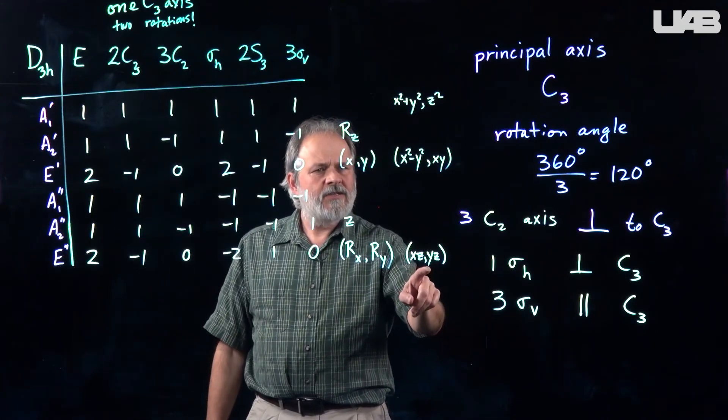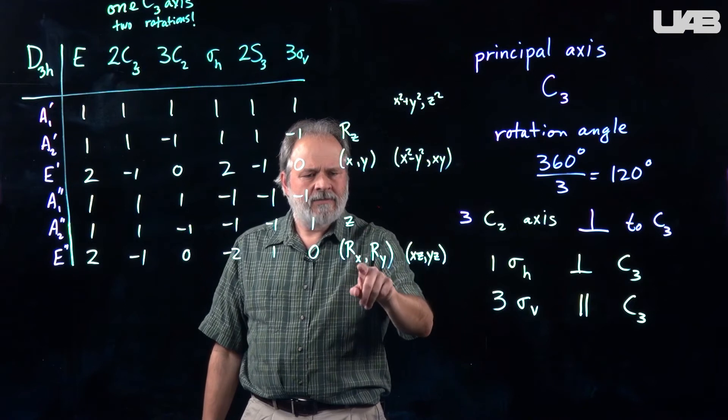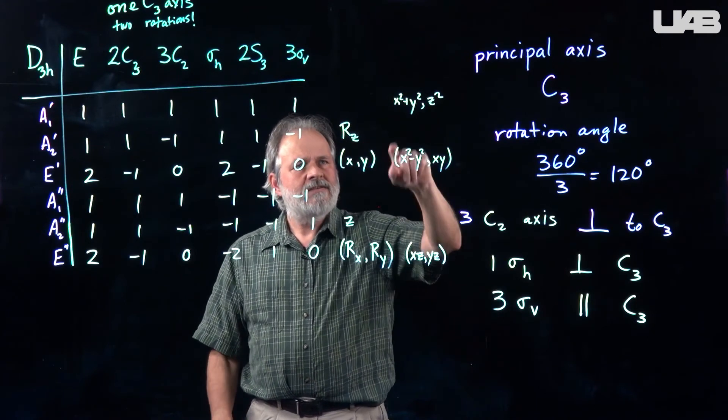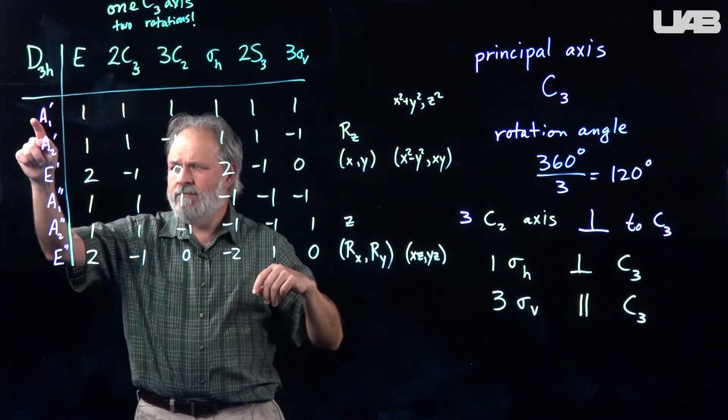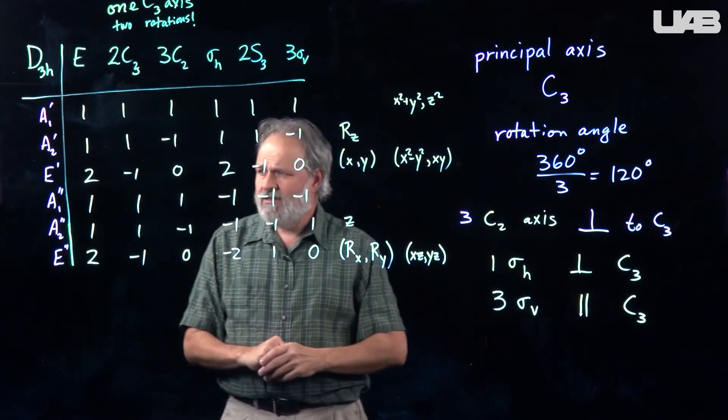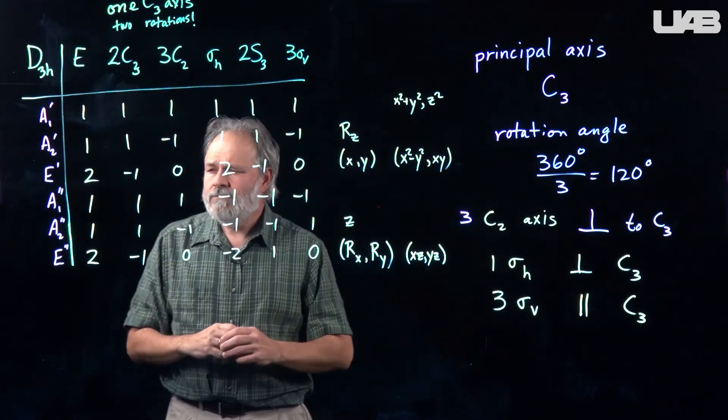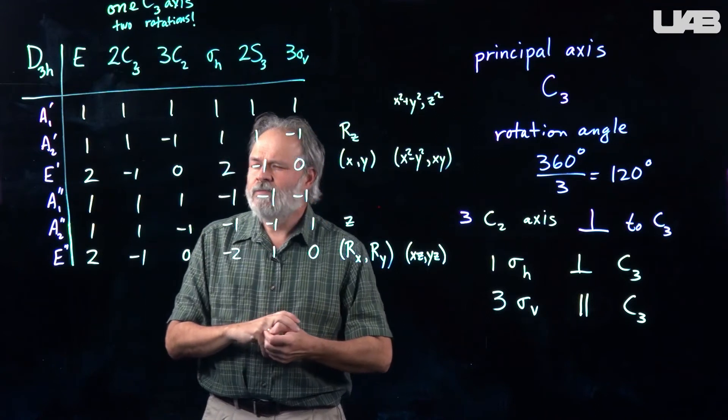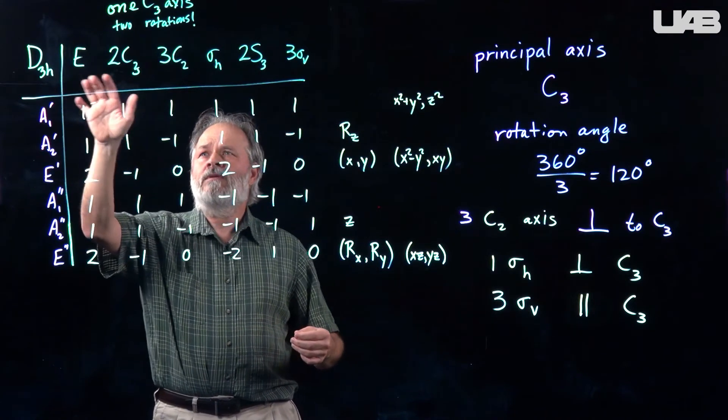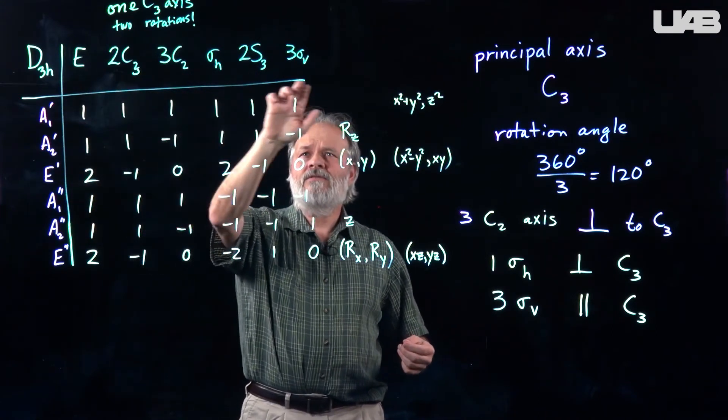So, there's the doubly degenerate set for the E's. Singly degenerate for the A's with various labels on them. So, the headings on the table tell us.